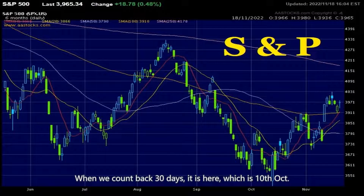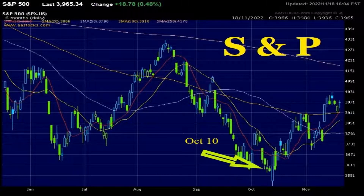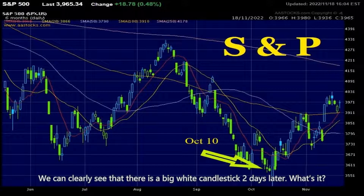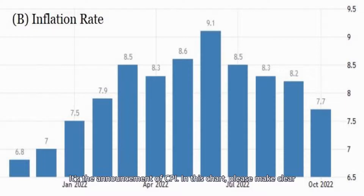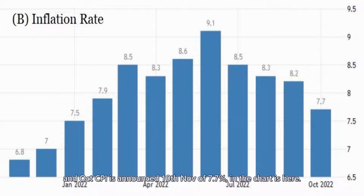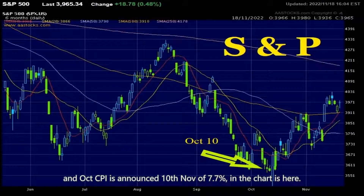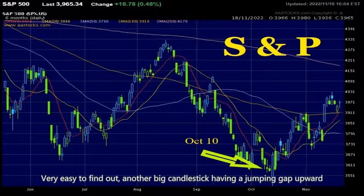When we count back 30 days, it is here, which is 10th of October. We can clearly see there's a big white candlestick. Two days later, it's the announcement of CPI. Please note the September CPI was announced on 12th of October at 8.2%, and October CPI was announced on 10th of November at 7.7%. In this chart, it's here — very easy to find out.